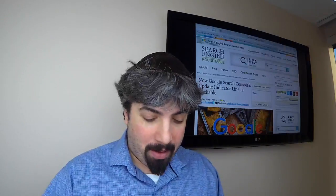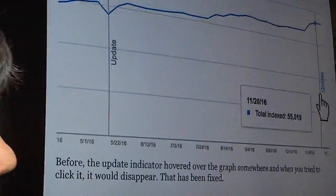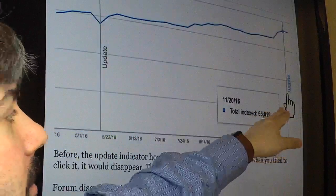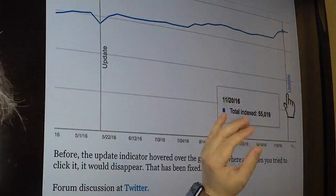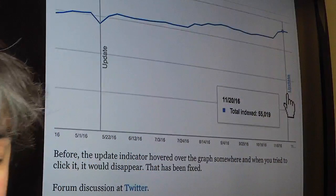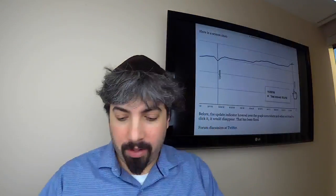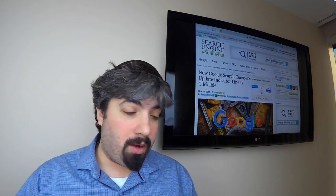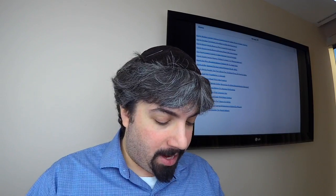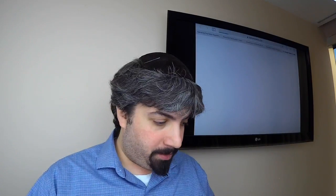One of my favorite things they released this week, and this is kind of small, but it's one of those things that really was one of my pet peeves, was the ability to click on the update line. Google used to have in their analytics reports or in Search Console, there used to be this update line. When you clicked on it, you had to click on update over here, but every time you tried to click on it, it would go away. It was just a weird thing. So now they actually update it so you can actually click on the update word and that will actually work and tell you what was updated.